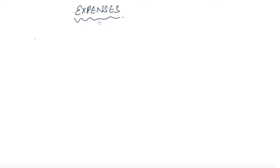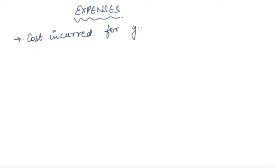Now coming towards our next term, that is expense. First of all, you must be aware that expenditure and expenses are two different terms. Expenditure is the amount that is spent today for getting future benefits. Expenses are also the amount spent, but the difference is that it is basically the cost incurred for generating revenue.